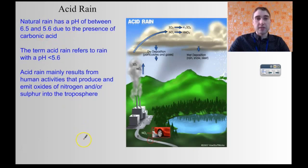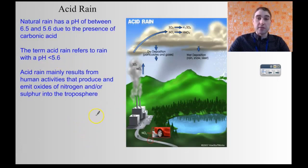Below 5.6, you can't really add any more carbon dioxide into the water — it's already saturated. So when we're talking about acid rain, we're talking about rain with a pH of less than 5.6. That's produced mainly as a result of human activities releasing oxides of nitrogen and sulfur into the atmosphere.